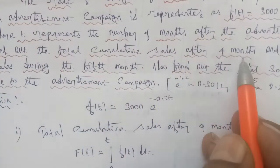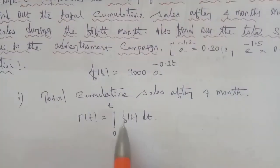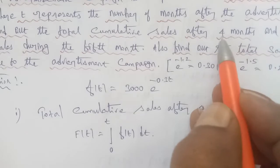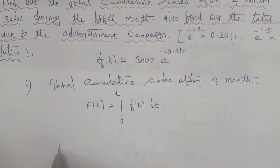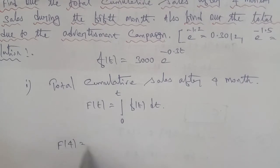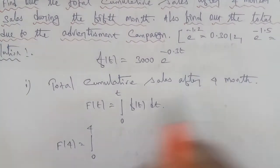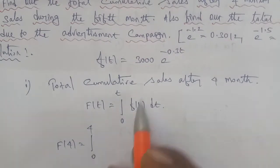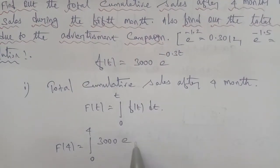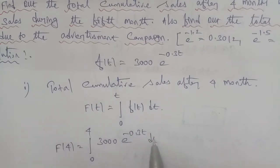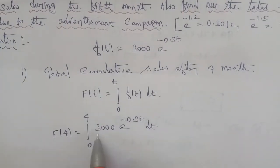For sub-question one, find the total cumulative sales after four months. So t = 4. Putting it in the formula, F(4) = integral from 0 to 4 of f(t) dt = integral from 0 to 4 of 3000 e^(-0.3t) dt.